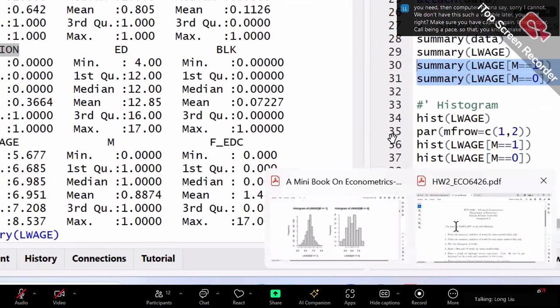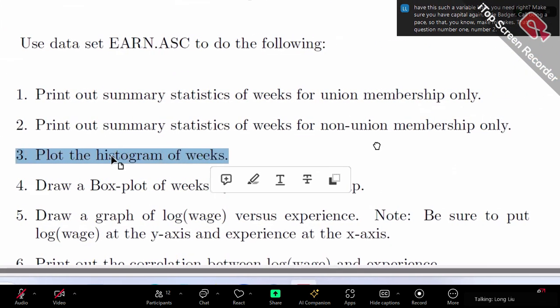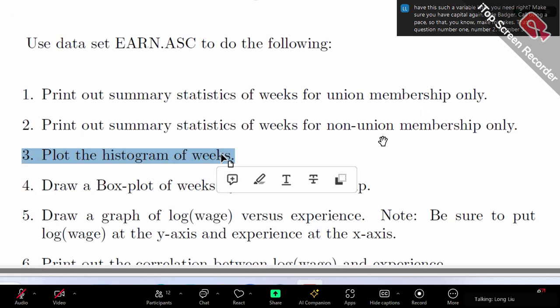That's question number one, number two. Number three, plot histogram for WKS.